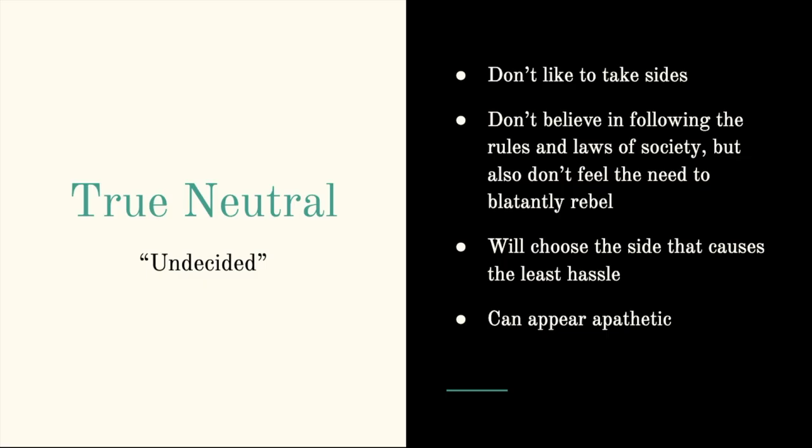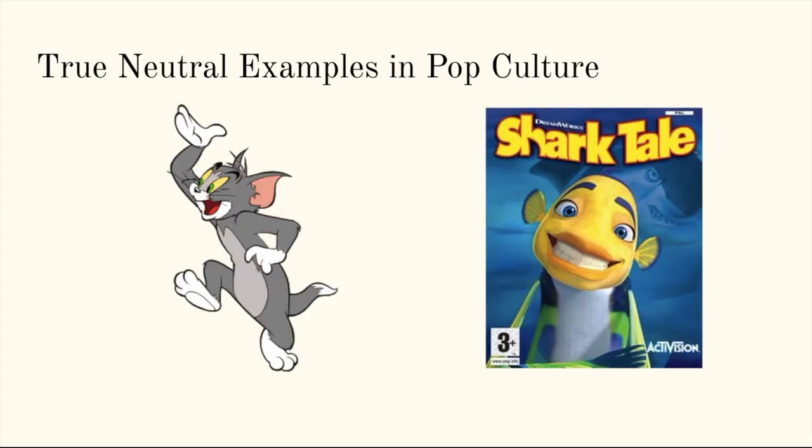Next, we have true neutral, or undecided. A true neutral character usually doesn't like to take sides on an issue. They don't believe in following the rules and laws of society, but they also don't feel the need to blatantly rebel against them — they'll choose the side that causes the least hassle. Because they're in the middle of the alignment chart, it is easy for them to teeter-totter toward neutral good or neutral evil with a string of choices in either direction. True neutral examples include Tom from Tom and Jerry and Oscar from Shark Tale.